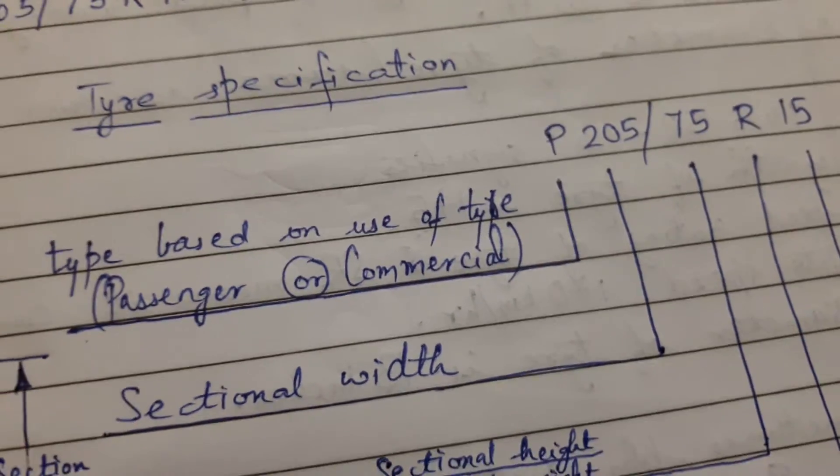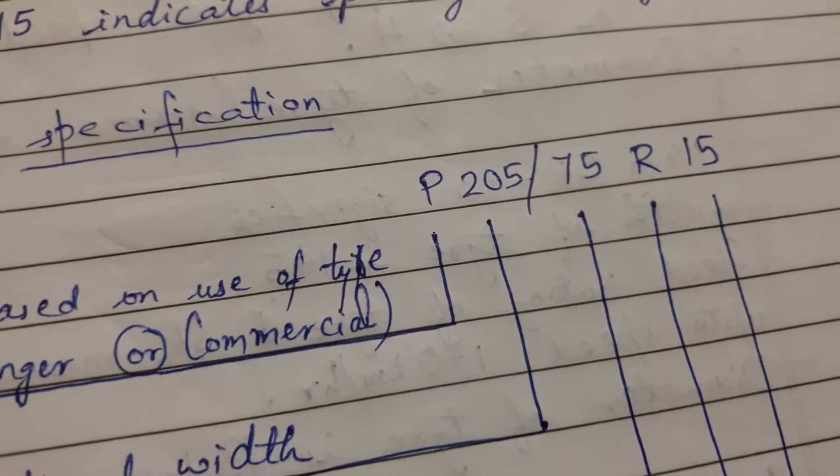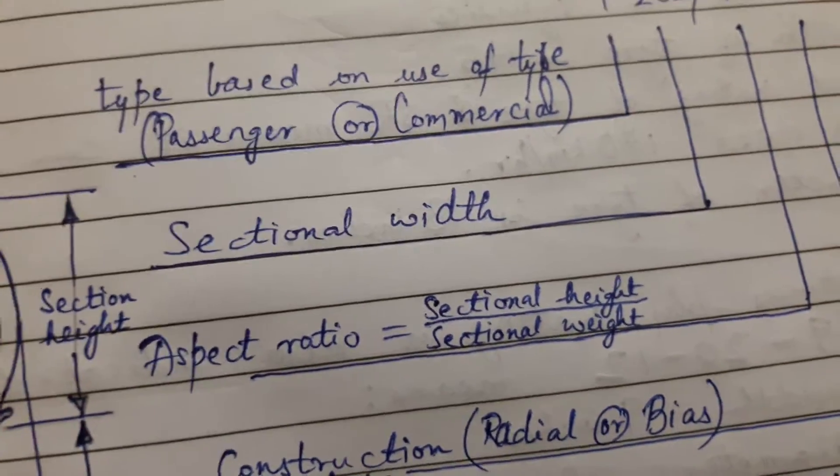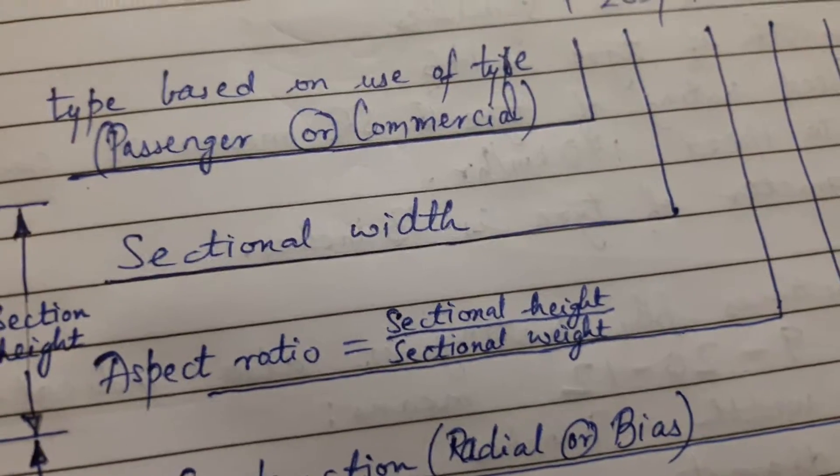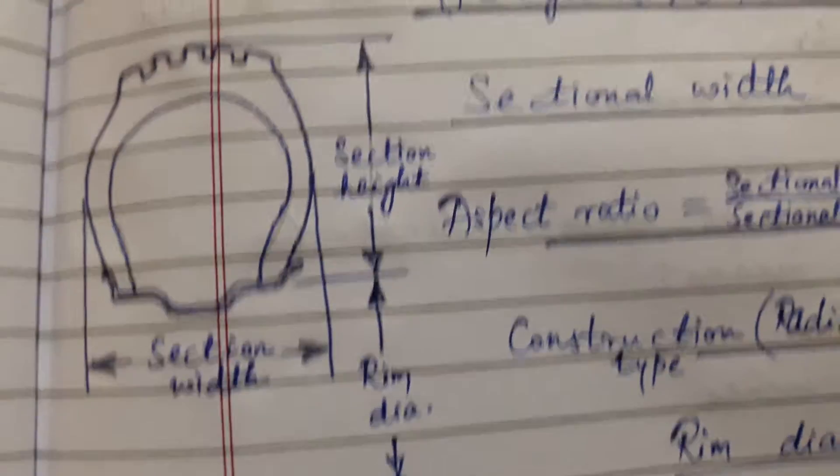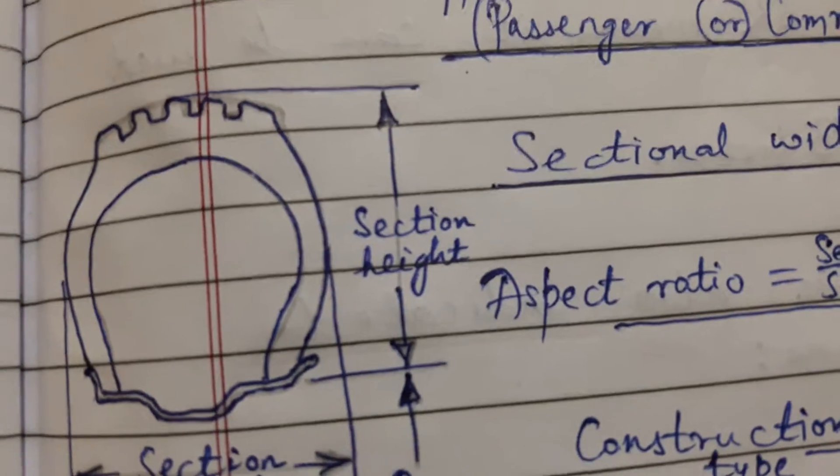The unit is mm. Now slash 75. 75 is the aspect ratio, which is equal to sectional height upon sectional width. As you can see, this is the sectional width and this is the sectional height of the tire.